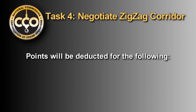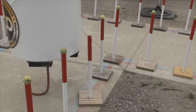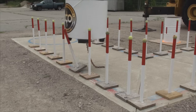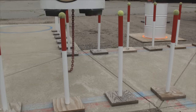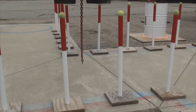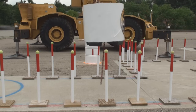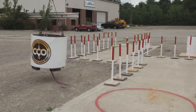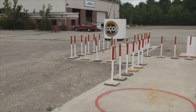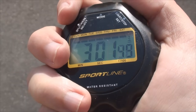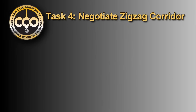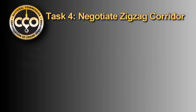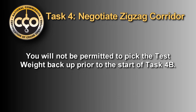Points will be deducted for the following: knocking a ball off a pole; moving a pole base off the line; knocking a pole over; chain leaving the ground; passing poles with the chain off the ground; load touching the ground; circumventing the course; exceeding optimum time. Once Task 4A is complete, the practical examiner will provide you an opportunity to reposition the boom tip over the test weight, but you will not be permitted to pick the test weight back up prior to the start of Task 4B.